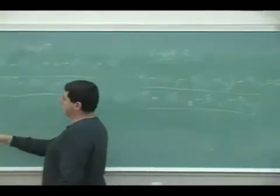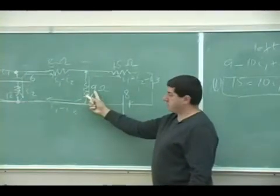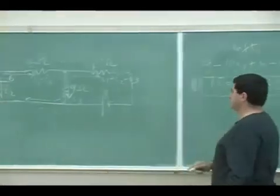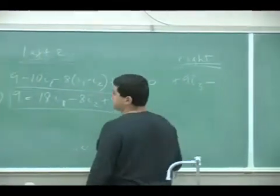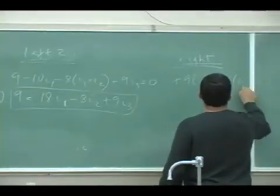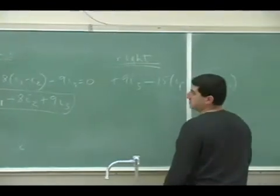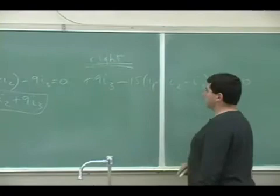Right loop. So when I'm doing the right loop, I go against the 9. So a positive 9i3, minus 15, i1, minus i2, minus i3, and then plus 8. 8 equal to 0.